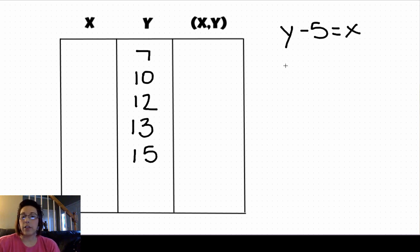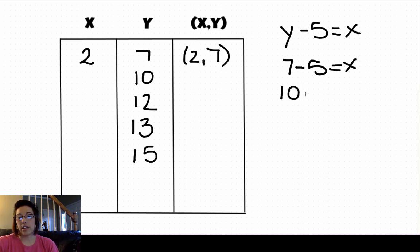So let's start plugging in the values of y. 7 minus 5 equals x. That would make this 2. Our ordered pair is 2, 7. 10 minus 5 equals x. So x would be 5. Ordered pair 5, 10.